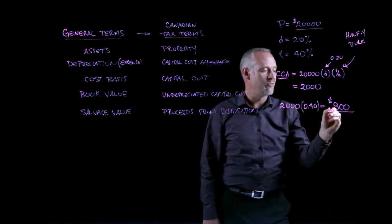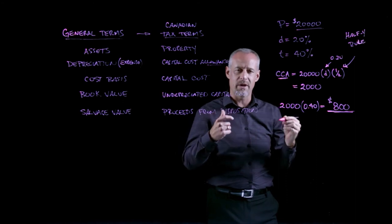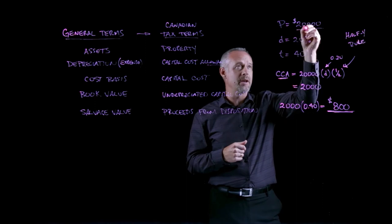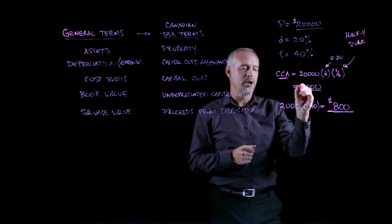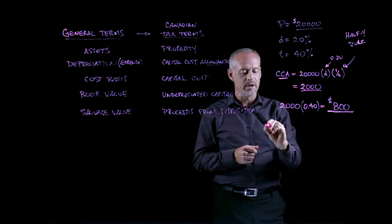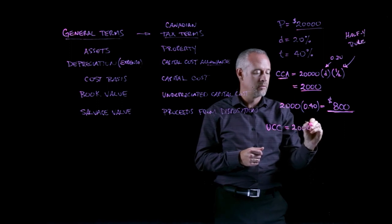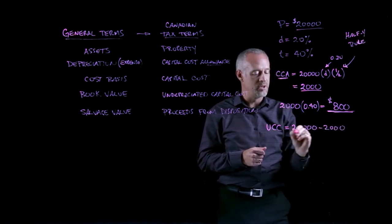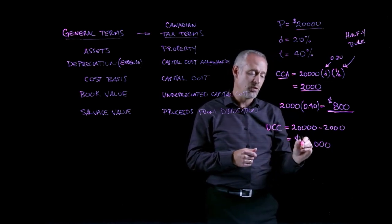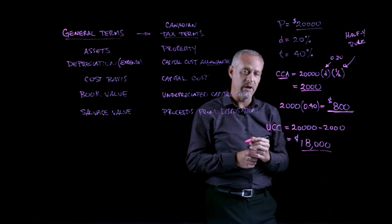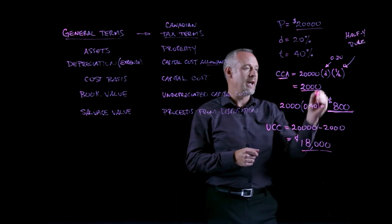This is the answer to the first part of the question. The question also asks: what is the undepreciated capital cost at the end of year one? We had a starting asset value at time t = 0 of $20,000. We calculated an allowable depreciation expense of $2,000. So the undepreciated capital cost — typically abbreviated UCC — at the end of year one is $20,000 minus $2,000, giving us $18,000. This $18,000 will be the beginning book value at the start of year two.